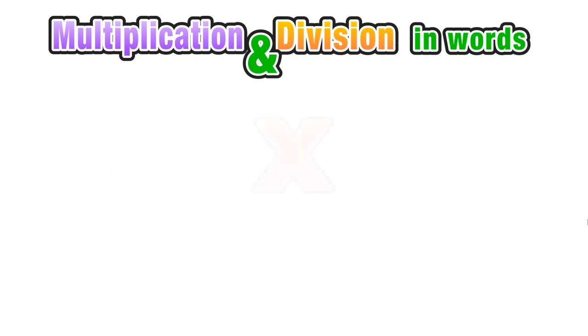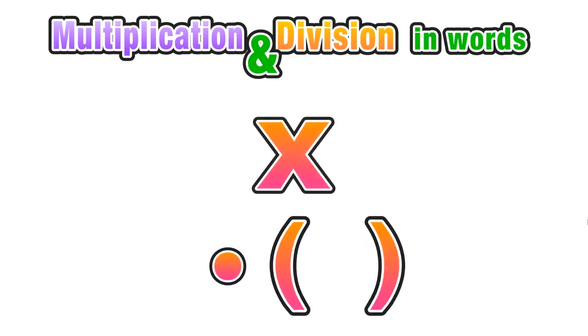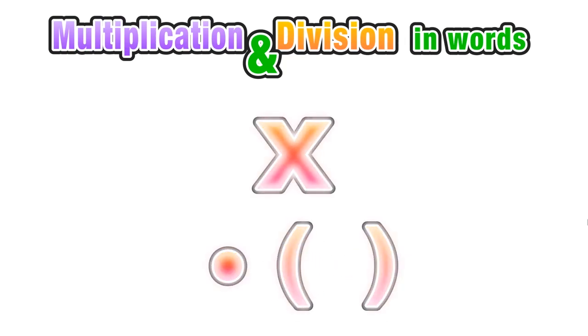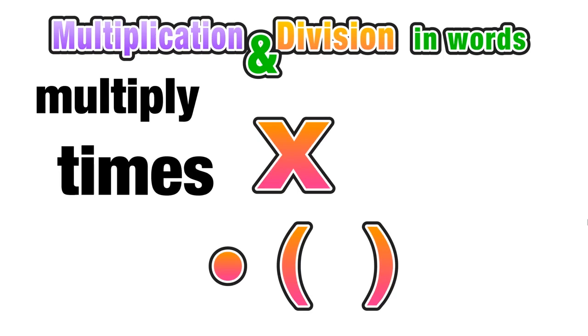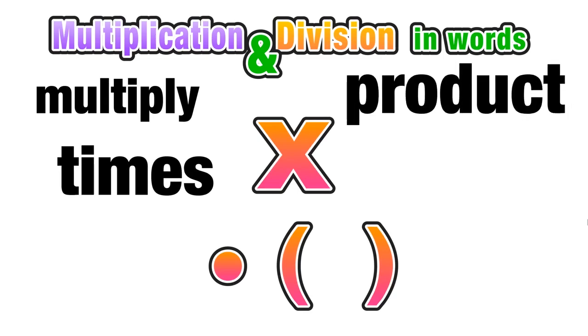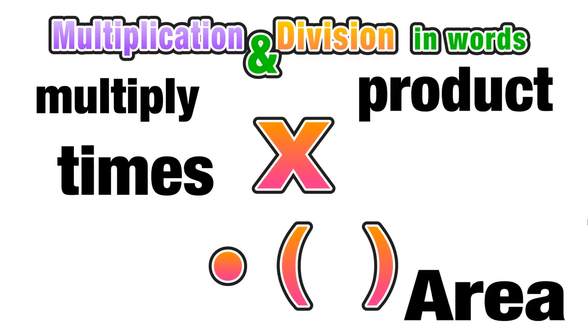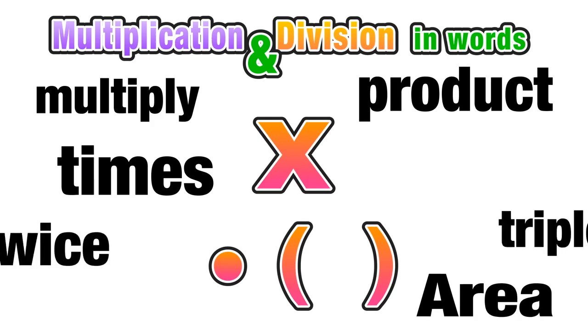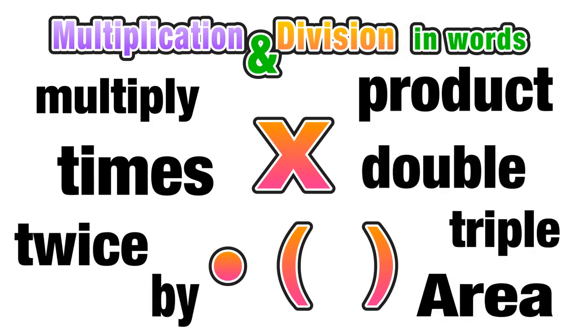So let's start off with multiplication. We have a few different symbols that we use to represent multiplication, and we also have many different words and phrases, such as multiply, times, product, area, twice, triple, double, or by. Any of these words or phrases can be used to represent multiplication.